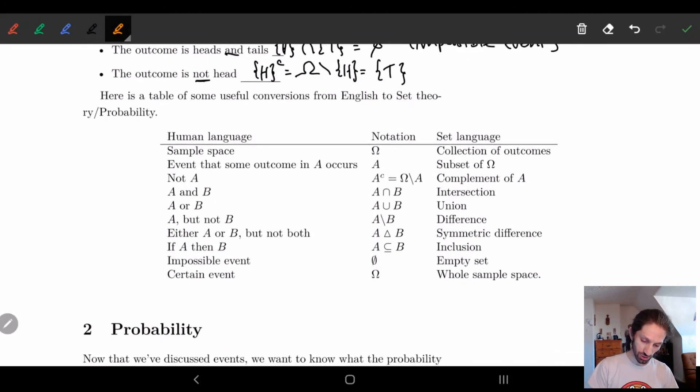So here I have a list of a bunch of different ways to kind of translate human language to set language. Most of these we kind of went over. Sample space, this is just some collection of outcomes. Event that some outcome in A occurs is just some subset of A. Not A, remember it's just the complement. A and B is intersection. A or B, this is union. Impossible event is the empty set. A certain event is the whole sample space. The only three we didn't go over are these three. If we have A but not B, what we're basically saying is we want all the elements of A and we want to remove everything from B. We don't want the things in B. And this is just called the difference in set language. Sometimes you'll see books use A minus B, depending on if you're going to use another book.